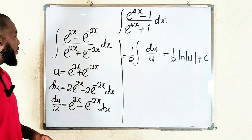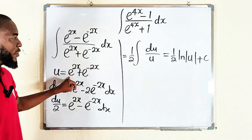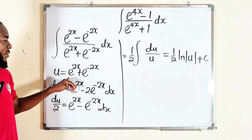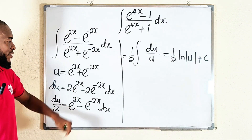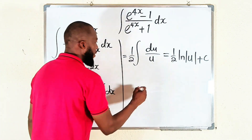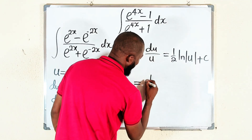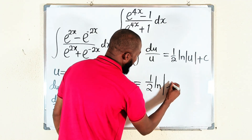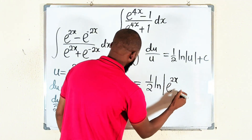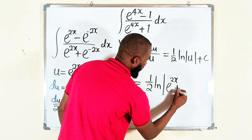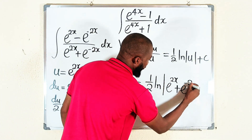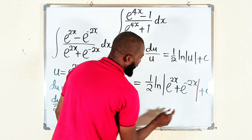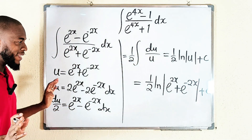The only thing we need to do is back substitute u. We have u equal to e^(2x) plus e^(-2x). So finally the answer is: 1/2 times the natural log of the absolute value of (e^(2x) + e^(-2x)), plus the constant of integration. As simple as that.